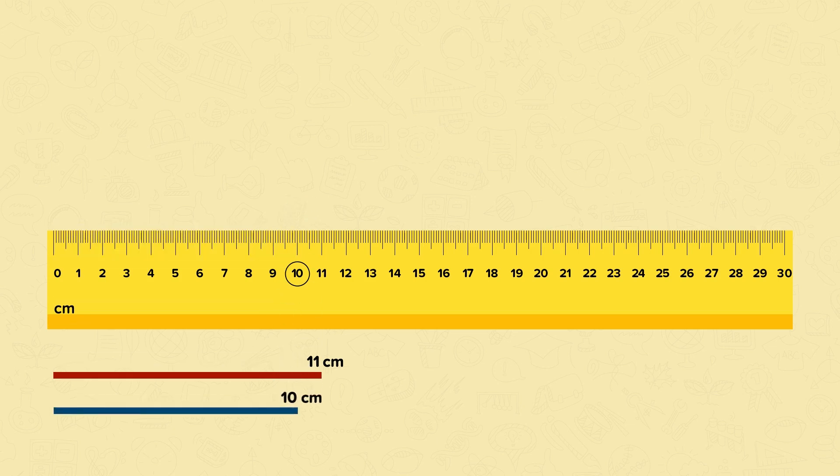This means that the blue line is 1 centimetre shorter than the red line.